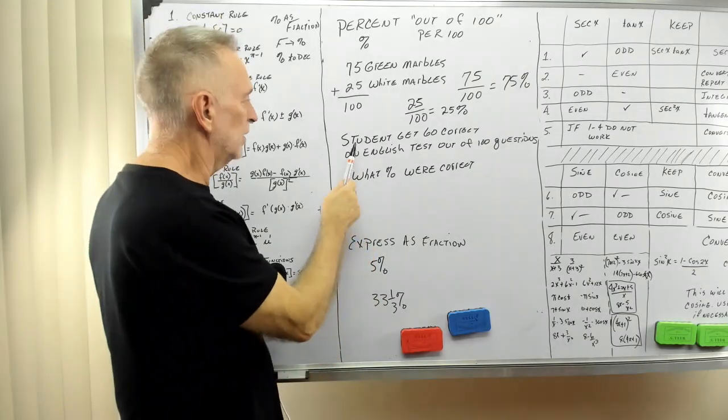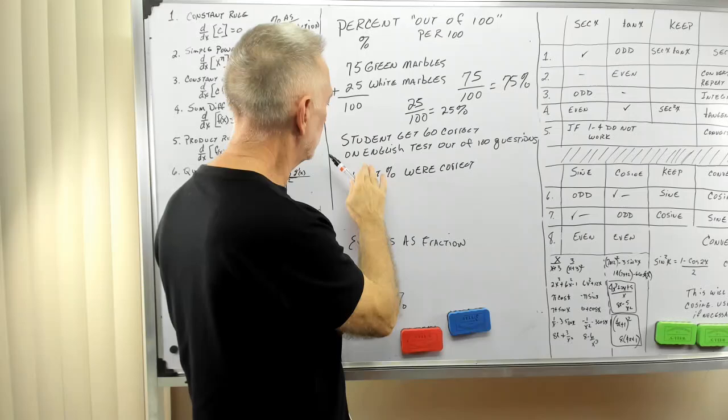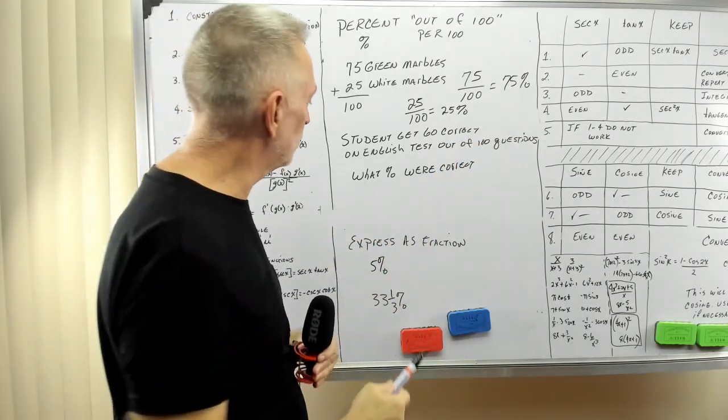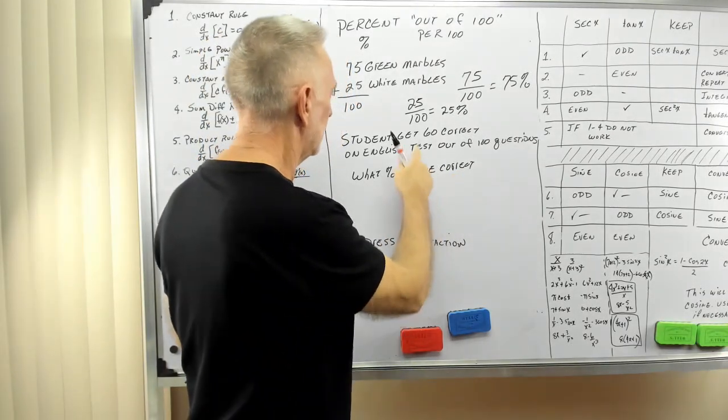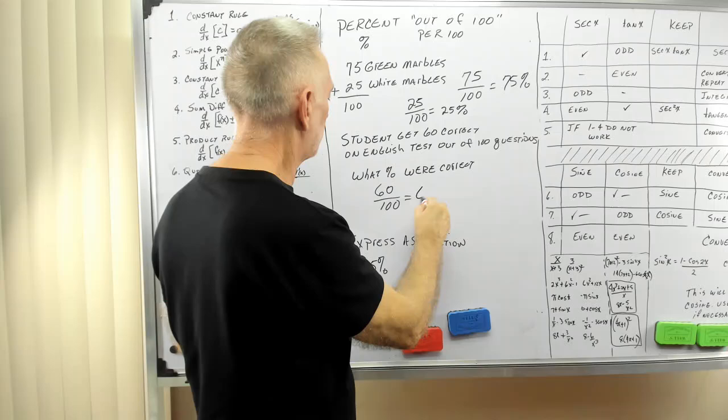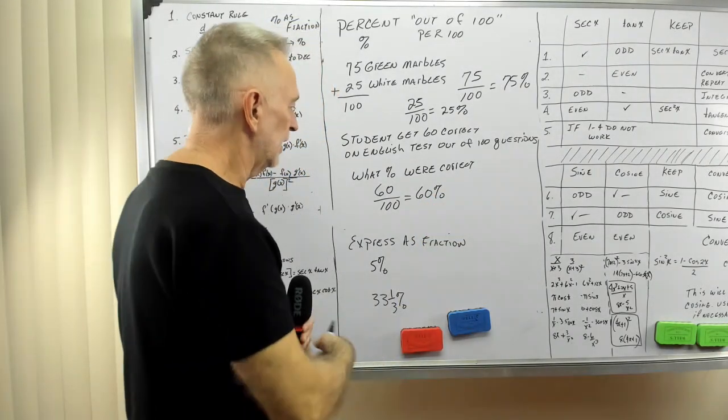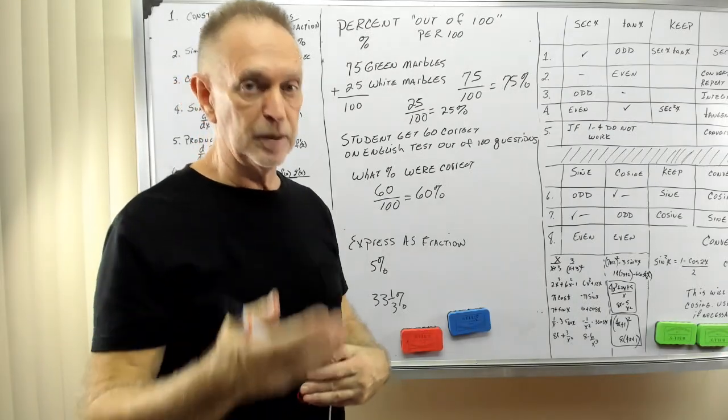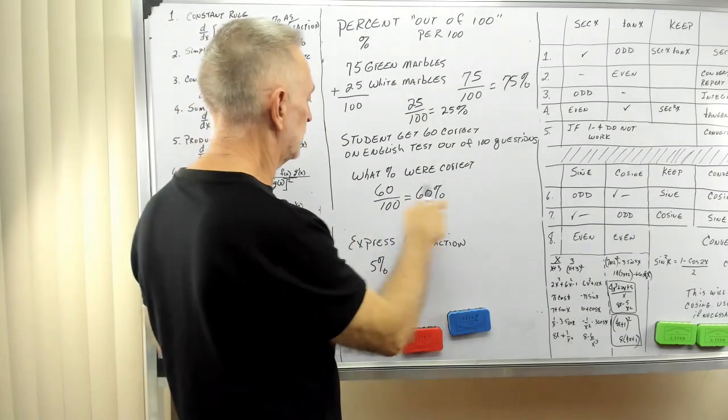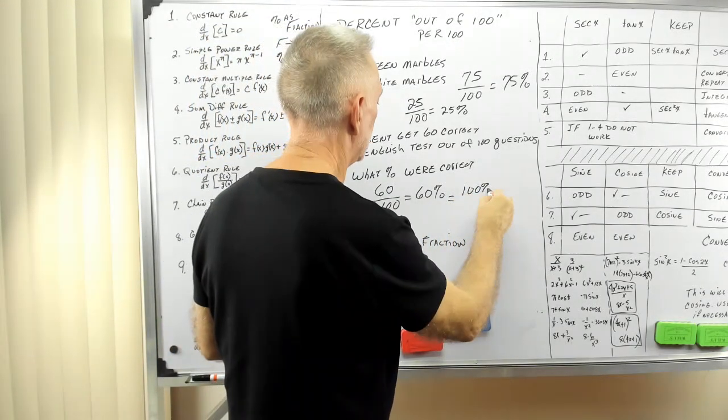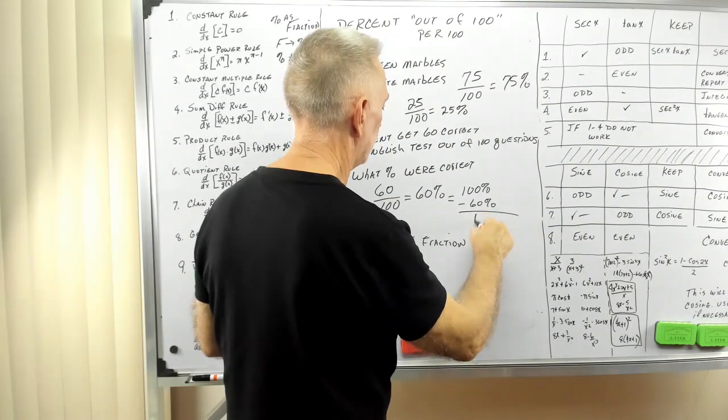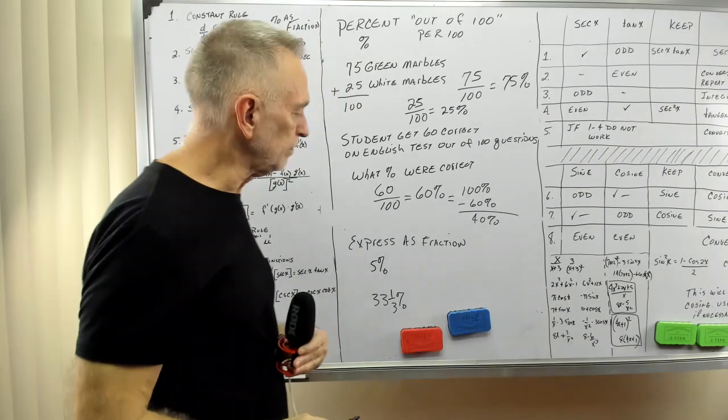Alright, a student gets 60 answers correct on an English test. This sounds like me. That's out of 100 questions. 60 out of 100. What percent were correct? He ended up getting 60 out of 100 correct. Since it's out of 100, I can replace all of that with this percent sign. That's 60 percent. If he got 60 percent correct, what percent were wrong or incorrect? So 100 percent would be if he got them all correct, minus the 60 percent, leaves me 40 percent would be incorrect.